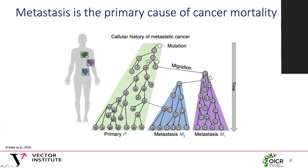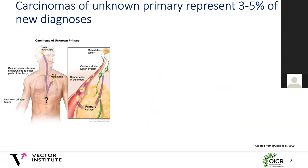Metastasis is a major clinical challenge and it's the primary cause of cancer-related mortality. Because cancer has developed as a process of somatic evolution, metastases will contain ancestral information about the primary tumor in the form of mutations that are common amongst the metastasis and the cells from the primary tumor that gave rise to the metastasis. Typically, metastases have additional mutations and are often quite different from the primary tumor. Most of the time when a patient is diagnosed with metastatic cancer, it's relatively easy to determine what the primary tumor site is.